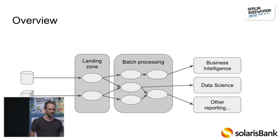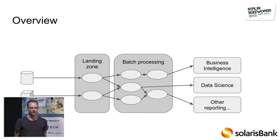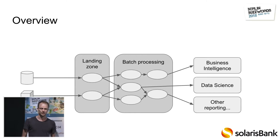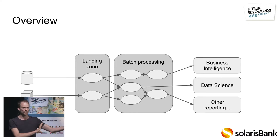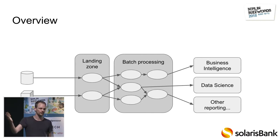Those businesses can then offer financial products or integrate them into their own products, so they can focus on their real products without dealing with the burden of getting regulation right — that's been done once in the core of Solaris Bank. The company is growing a lot — it's about two years old and already has 170 to 180 employees, with lots of products popping up. So you've got to get your data under control somehow.